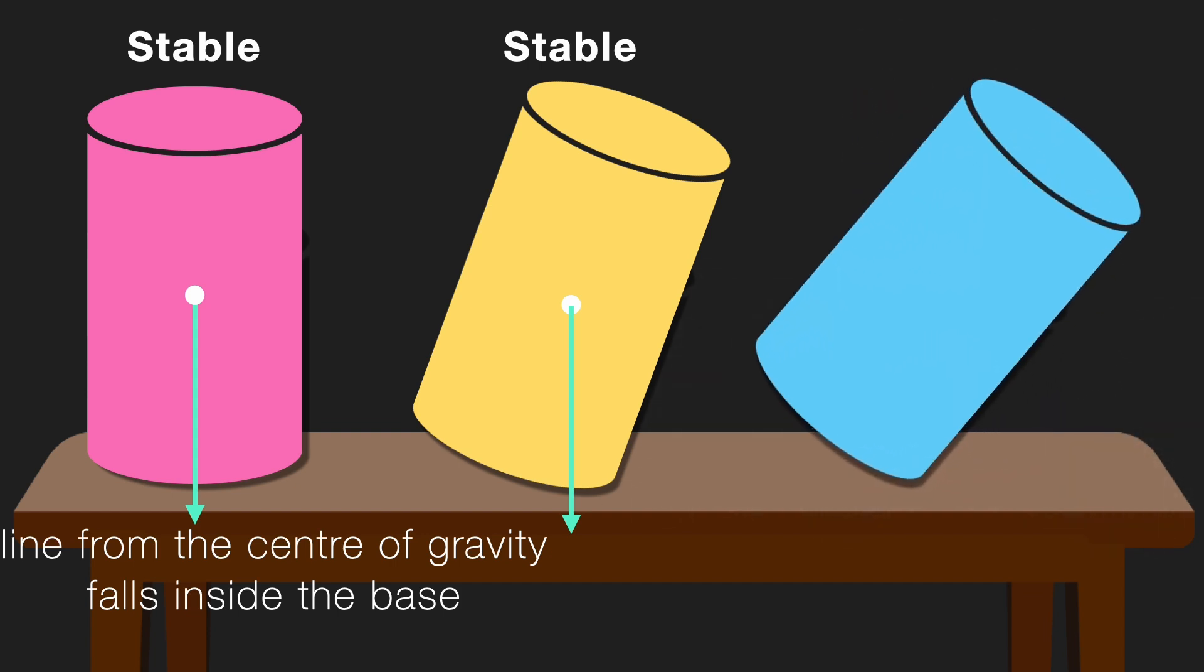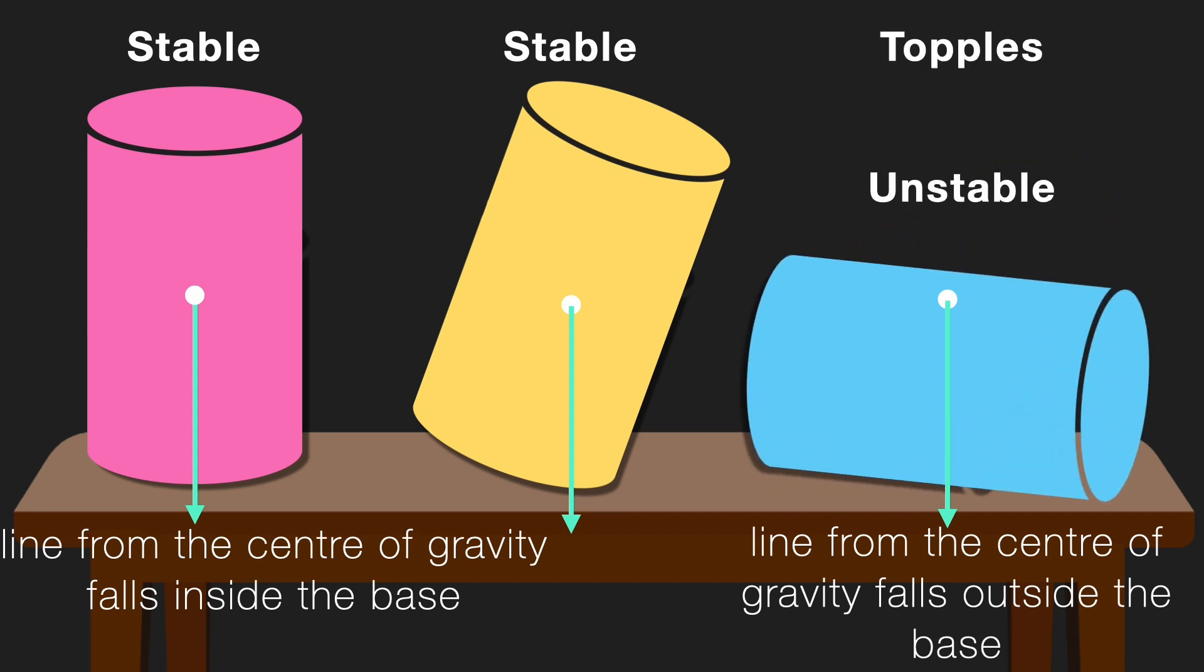But now let's go a step further. I'll take a third cylinder and this time I'm going to tilt it even more. Where is the center of gravity? The center of gravity is right at the geometrical center of the cylinder. Now what happens? The line from the center of gravity falls outside the base. What is the consequence? If the line from the center of gravity falls outside the base, it just topples and it is unstable.